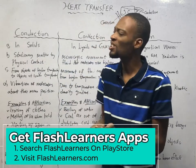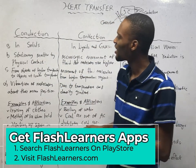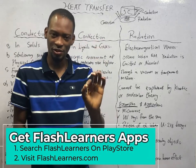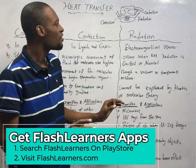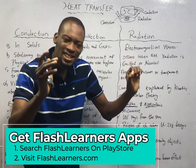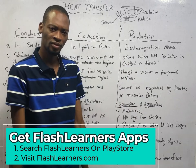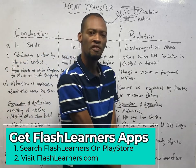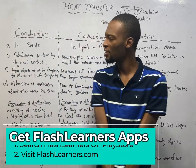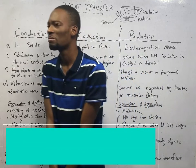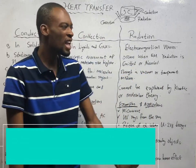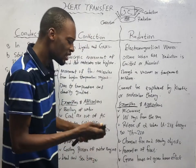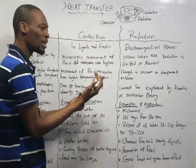The three methods of heat transfer are conduction, convection, and radiation. These are the three ways heat can be transferred. If it is not conduction, convection, or radiation, then heat may not be transferred. Transfer of heat is the process whereby heat flows from one body to another.